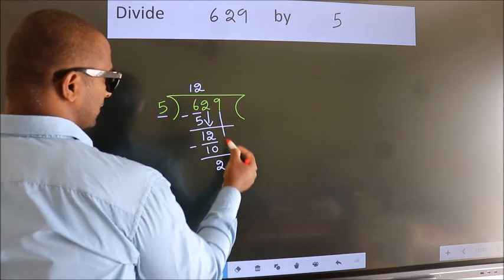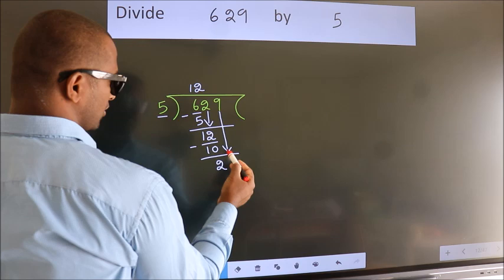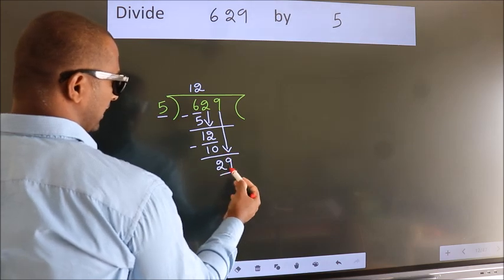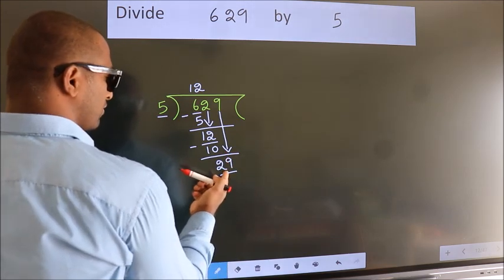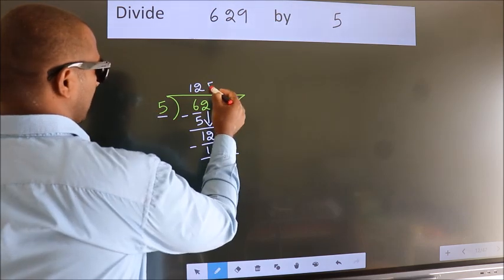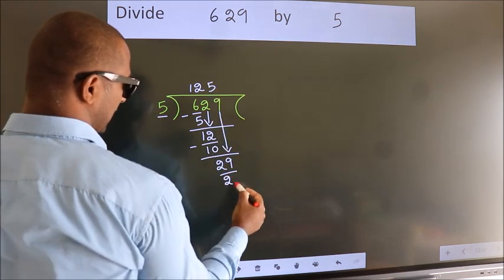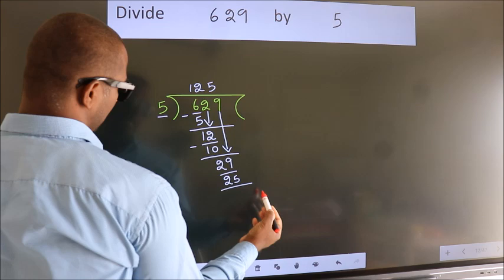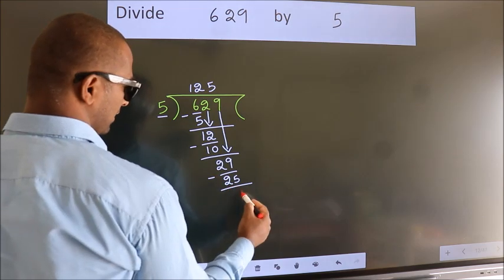After this, bring down the beside number. So, 9 down. So, 29. A number close to 29 in 5 table is 5, 5s, 25. Now, we subtract. We get 4.